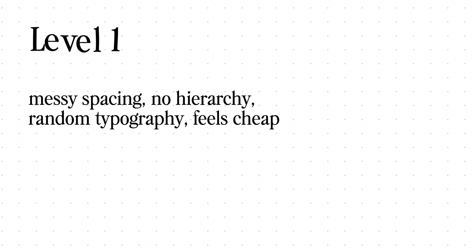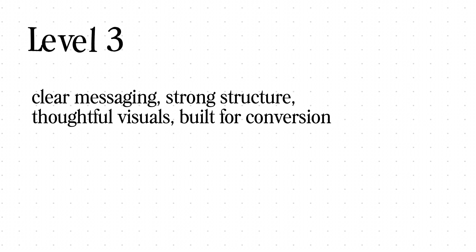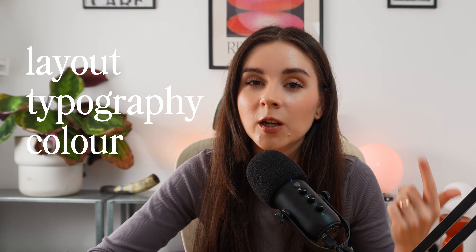Quick recap: Level one is messy spacing, no hierarchy, random typography — feels cheap. Level two is clean and consistent, but generic and not very strategic. Level three is clear messaging, strong structure, thoughtful visuals, built for conversion. Whether you're designing everything yourself in Figma or using tools like Hostinger Horizon, the same rules apply: layout, typography, and color doing their job properly.